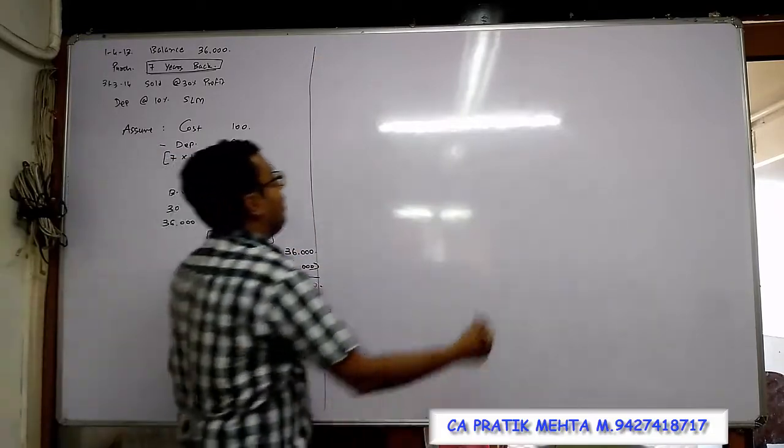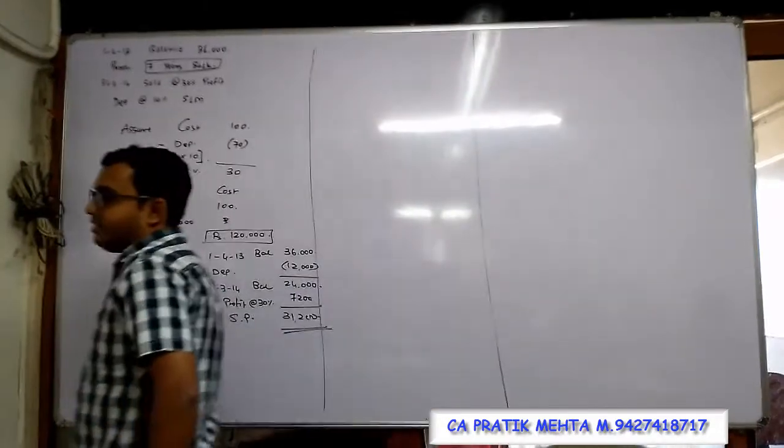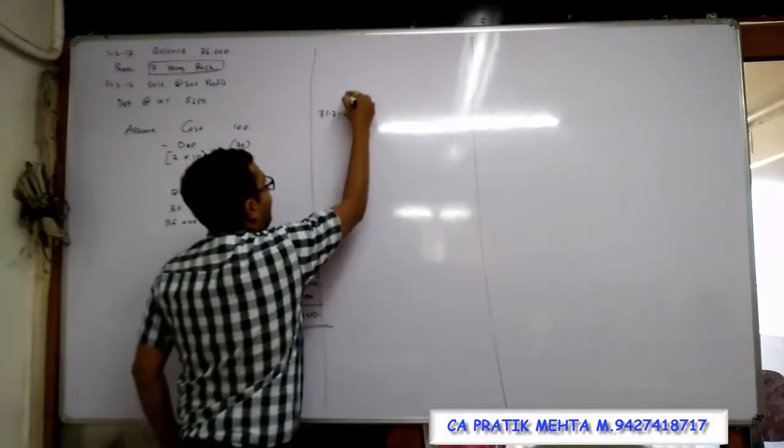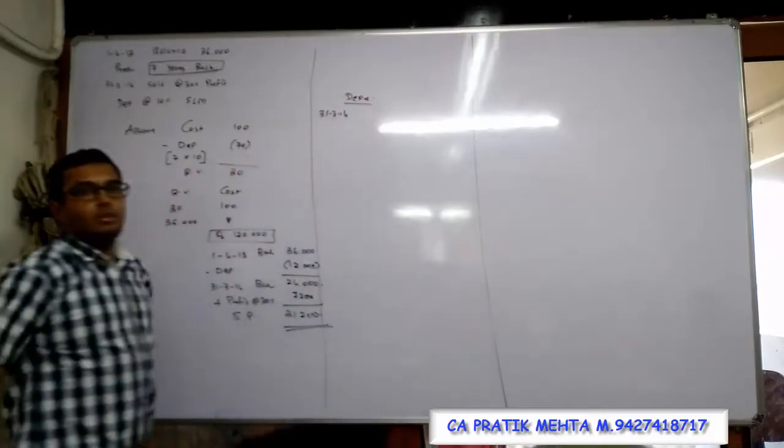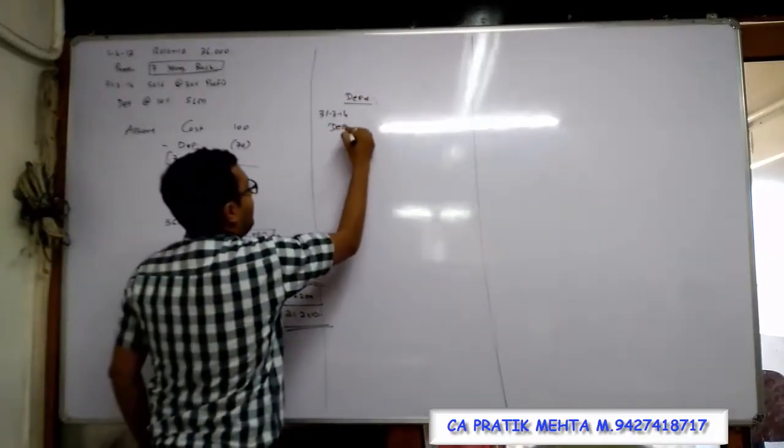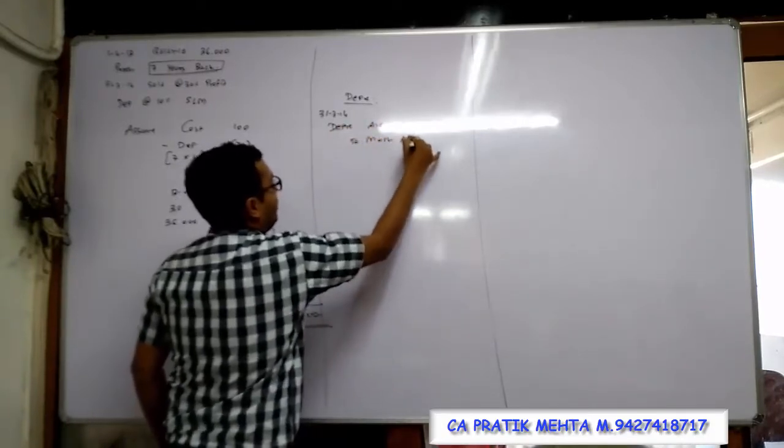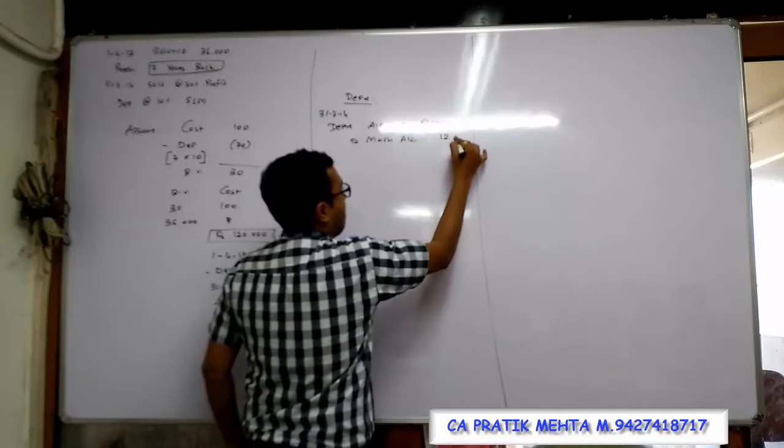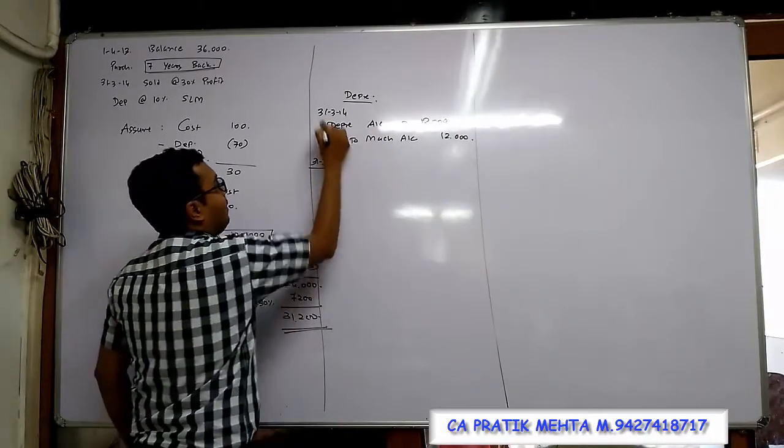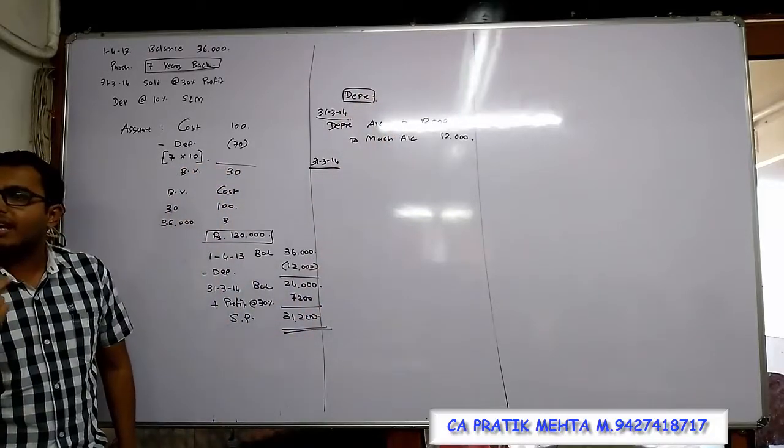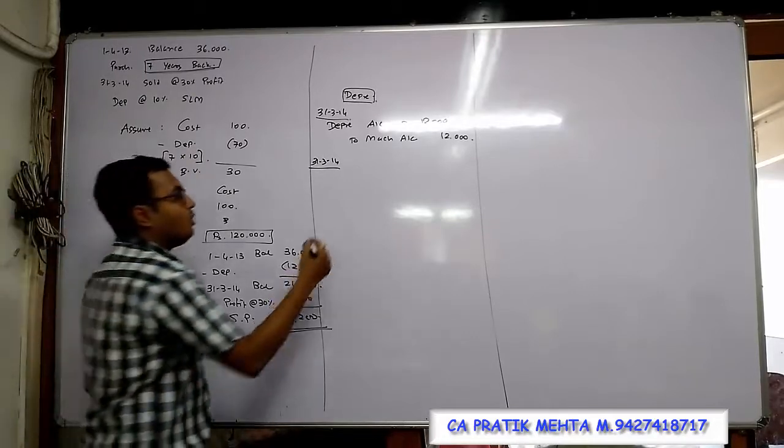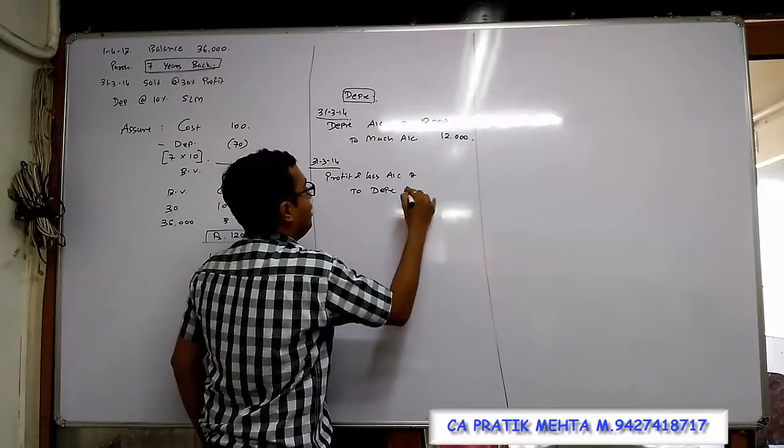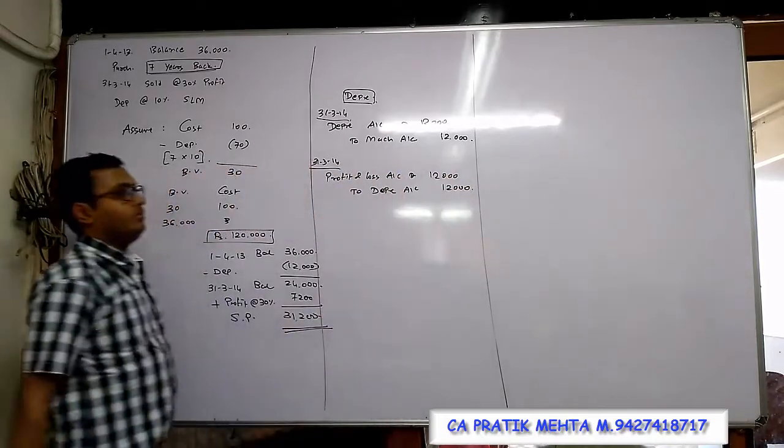After finishing this calculation, I would like to start with journal entries. The first journal entry will come at year's end - I will apply depreciation. When we give depreciation entry: Depreciation account debited to Machine account. The amount of depreciation is 12,000. On 31st March 2014, you know very well depreciation has two entries. The second one is profit and loss. So close this depreciation to P&L account: Profit and Loss Account debited to Depreciation Account, 12,000.